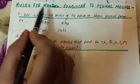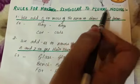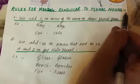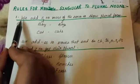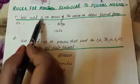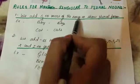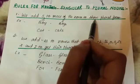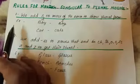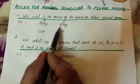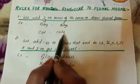Rules for making singular nouns into plural nouns. Rule number 1: we add S to most nouns to form the plural. Example: boy → boys, cat → cats.